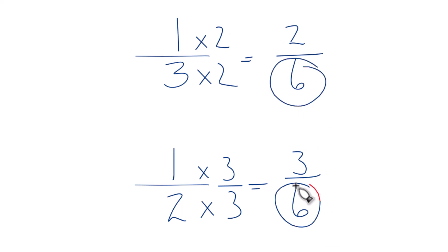Since the denominators are the same, we just compare the numerators to figure out which fraction is larger. So three is larger than two. So three sixths is larger than two sixths.